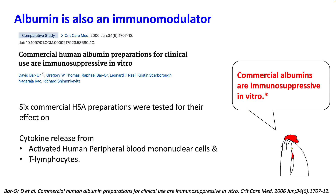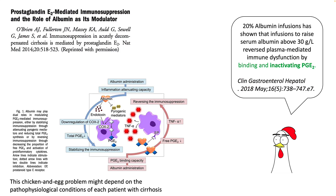In vitro, albumin has been found to have immunosuppressive properties and decreases cytokine release. Albumin also binds to prostaglandin E2-mediated immunosuppression, thereby reversing some of the immunosuppression caused by this molecule. Further studies are ongoing.